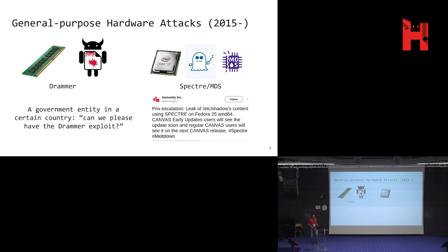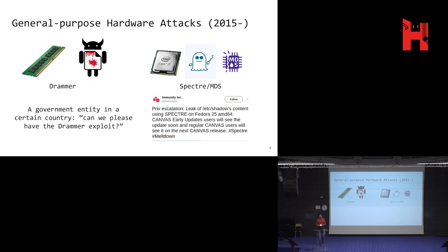What have we found? I was part of the team that did the attack called Drammer, which showed that using issues in DRAM you could actually compromise phones — you could get root if you're an untrusted app on an Android phone. In 2018, there were the Spectre and Meltdown vulnerabilities showing issues at the core of CPUs that allow you to leak secret information. Last year we also disclosed the MDS class of vulnerabilities in the same speculative execution class, showing that even with many defenses deployed, you could still do these types of attacks.